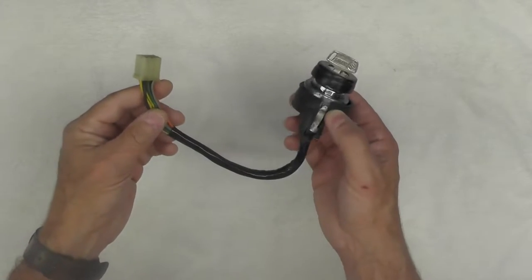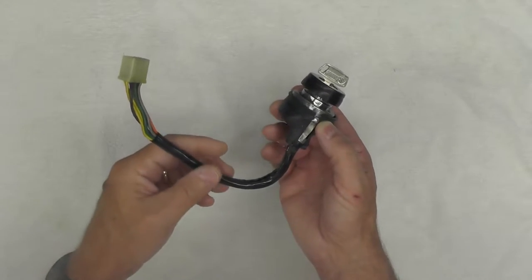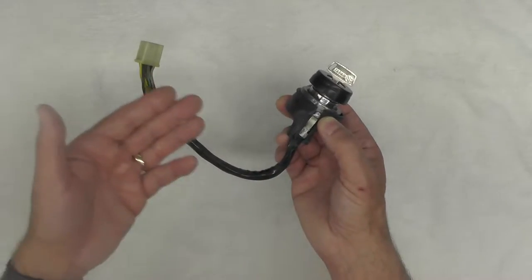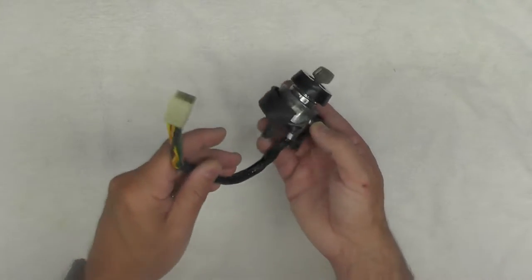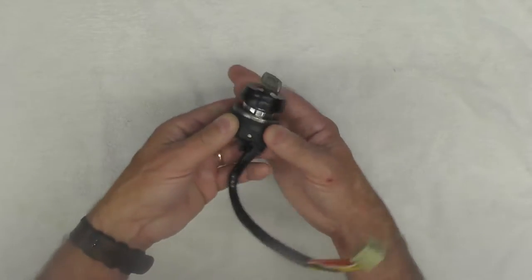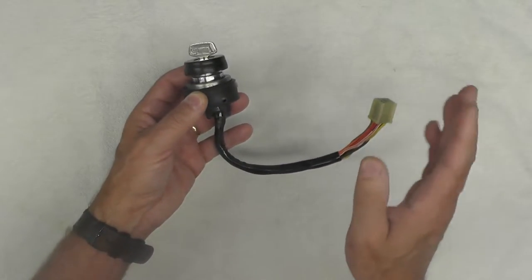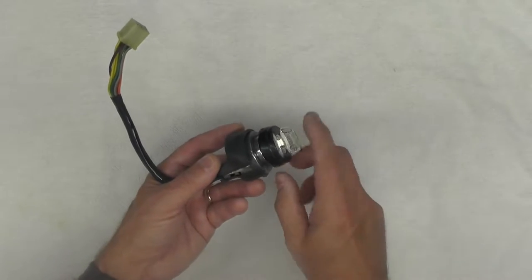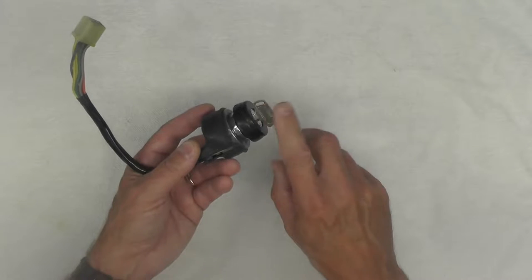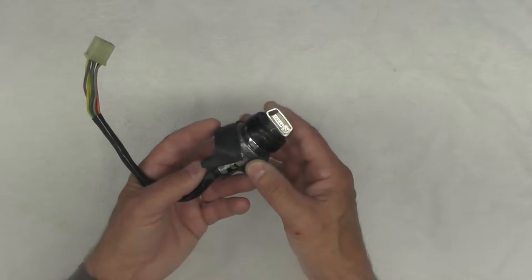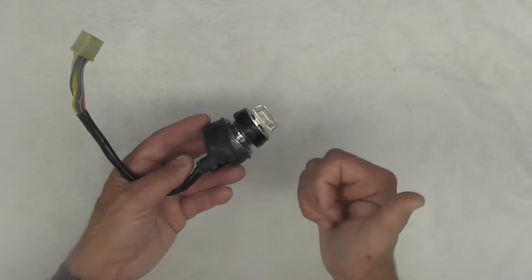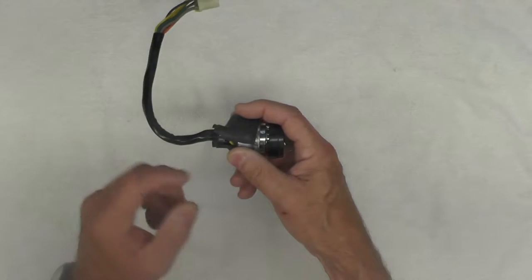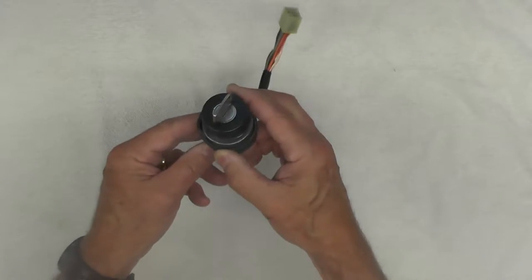I believe this is the original ignition switch that came with this bike. The primary thing, there's two things that tell me that - one is the general condition of it, the patina on this assembly and the wear matches the rest of the bike. And number two, the ignition key number, and I do have two keys for it by the way, the ignition lock number matches the steering head lock on the bike also. Since those two match, I'm pretty confident this is the original ignition switch.